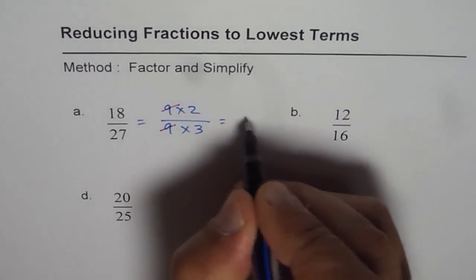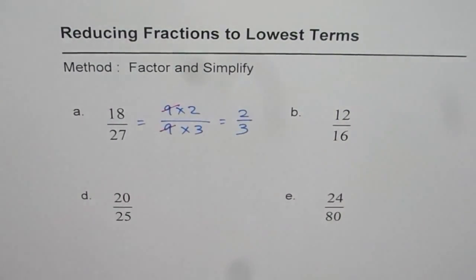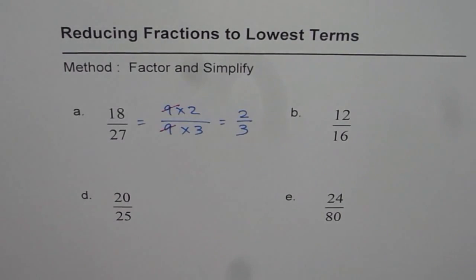Let's cancel them and write down 2 over 3 as a result. Now 2 over 3, both are prime numbers. They cannot be reduced further to a simpler term.